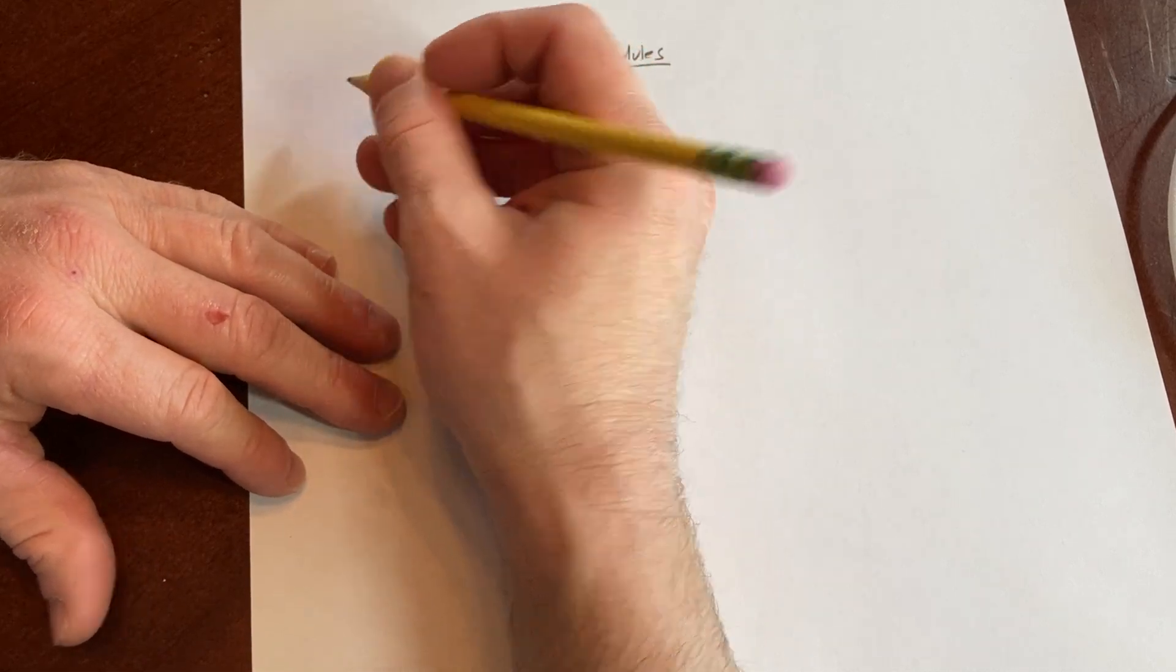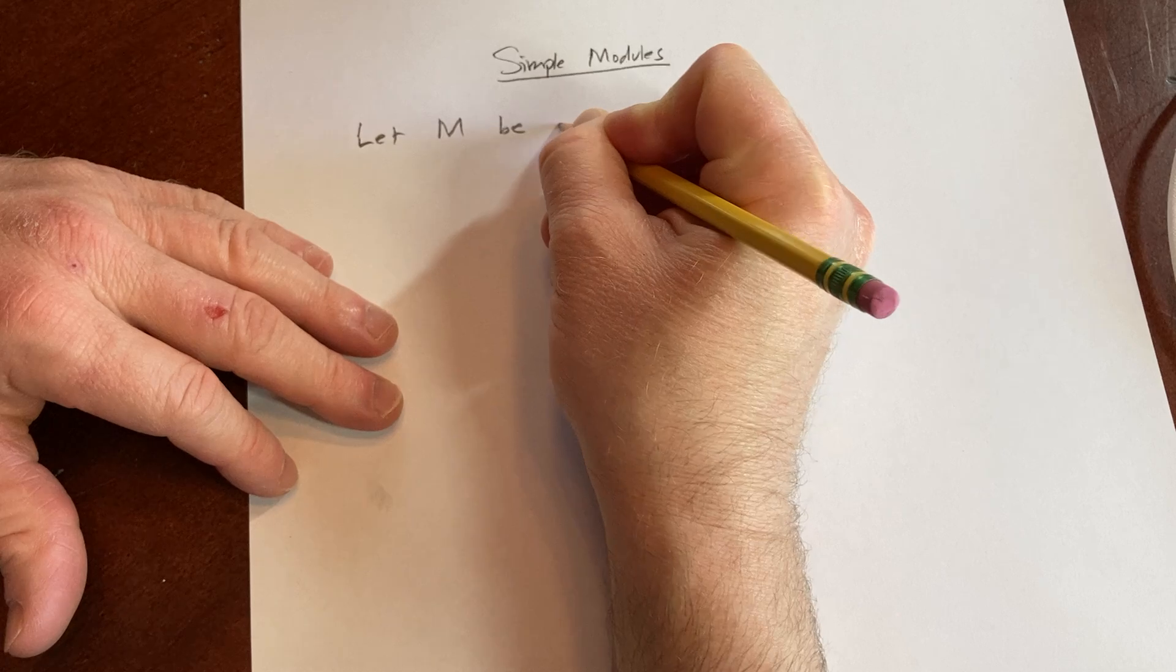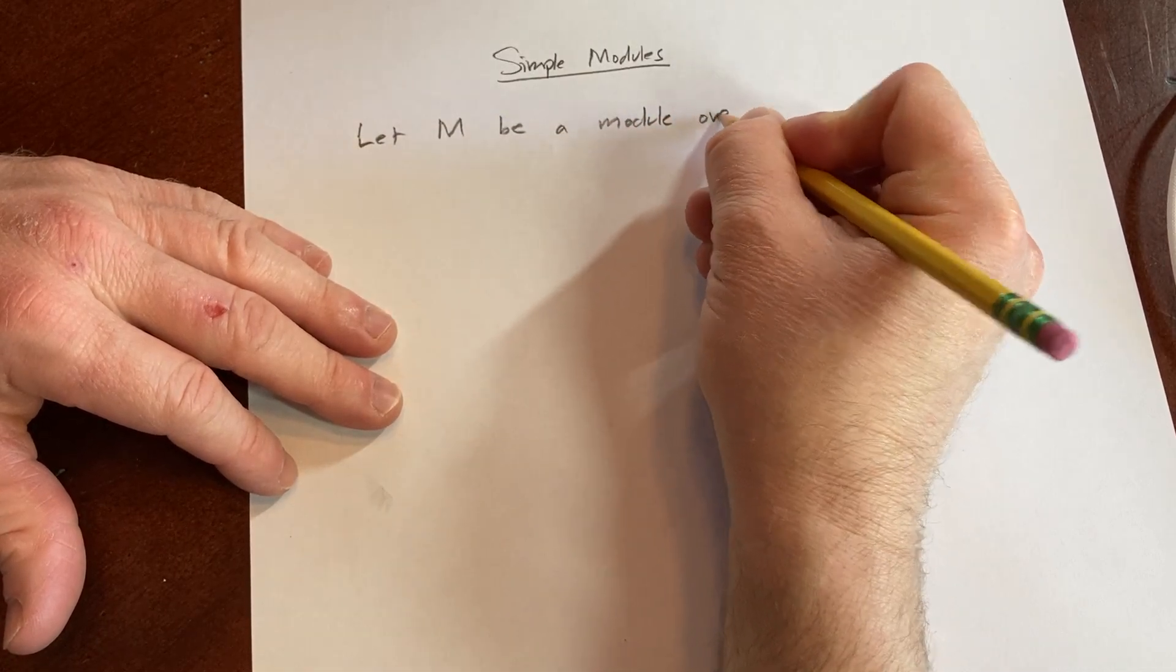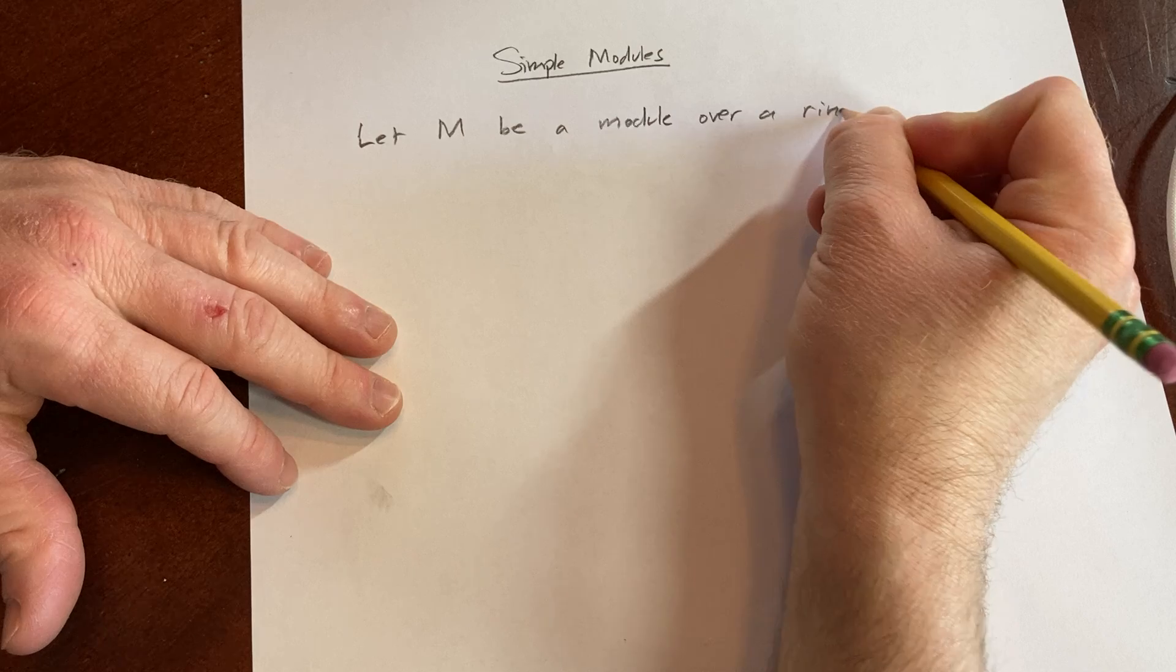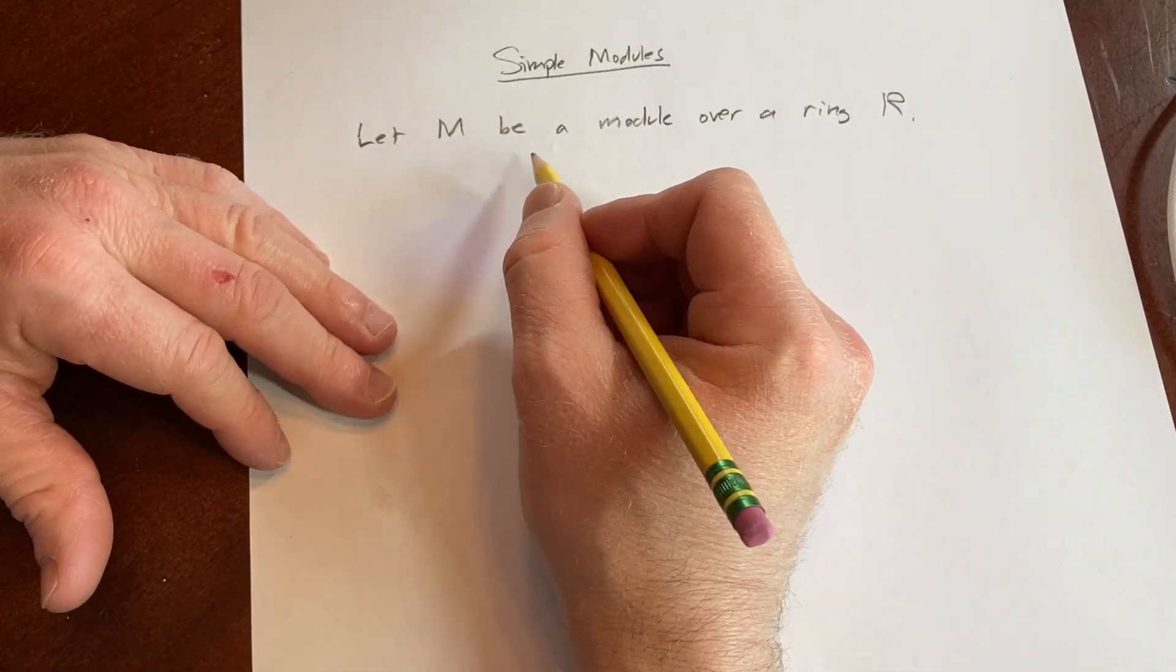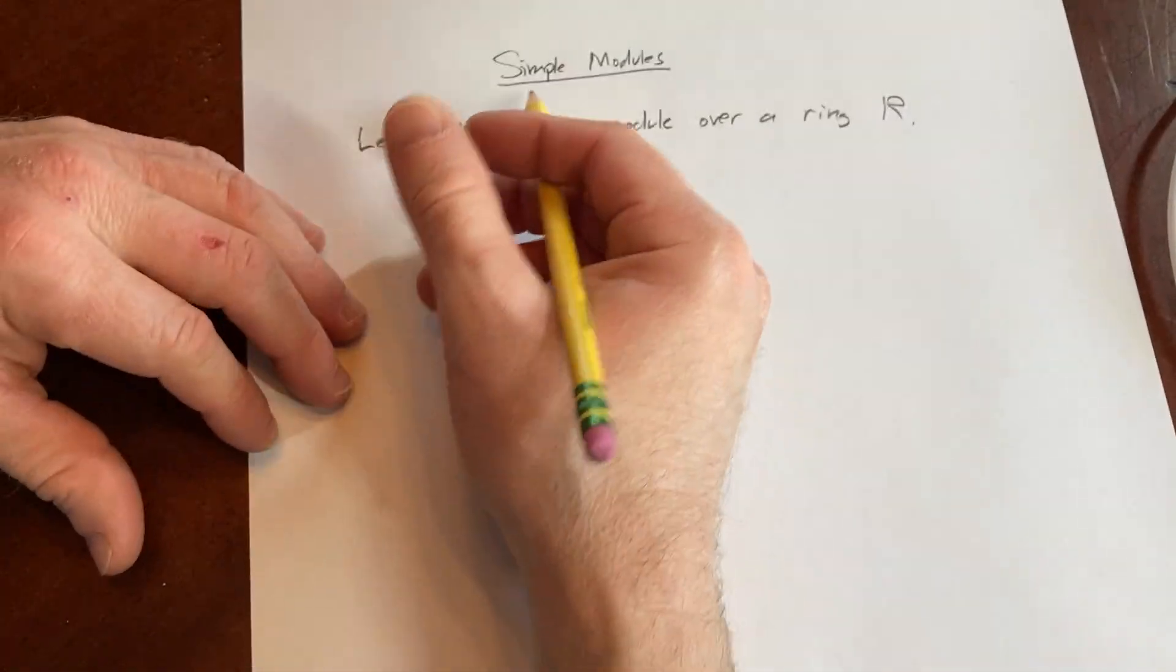So let's say let M be a module over a ring R. So you have M here and it's a module over a ring. Let's just say it's a left module or a right module. It doesn't really matter.